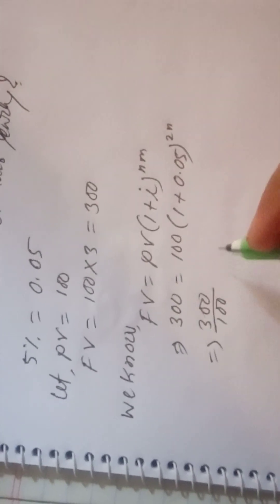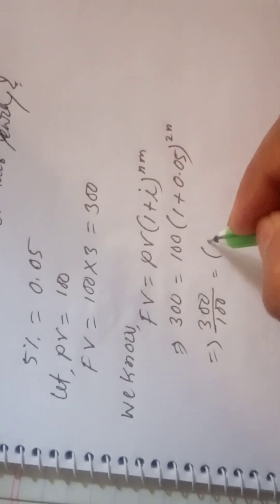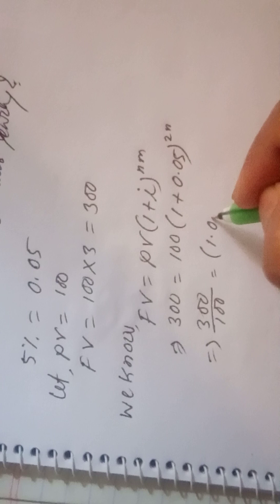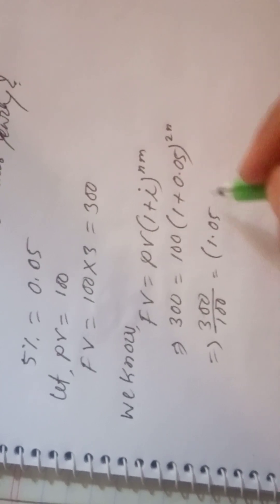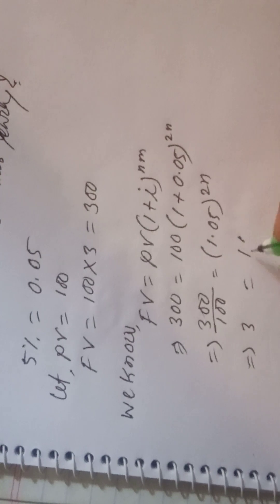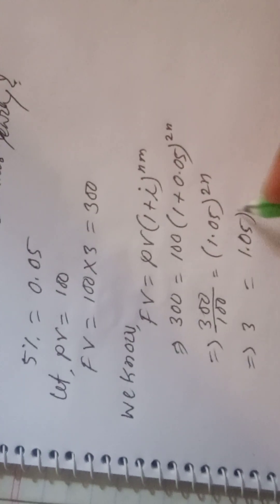300 by 100 equals 3, which equals (1.05)^(2n). Using log, log 3 equals 2n log 1.05.